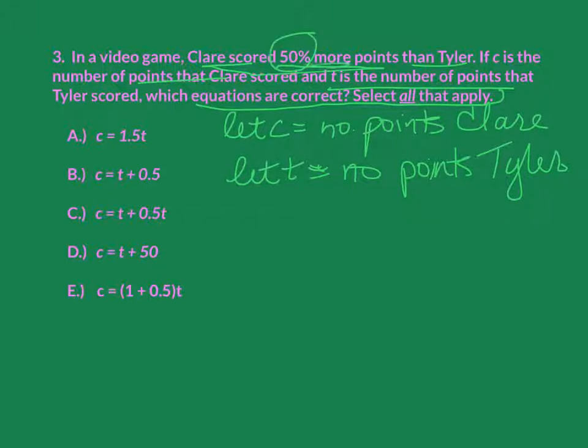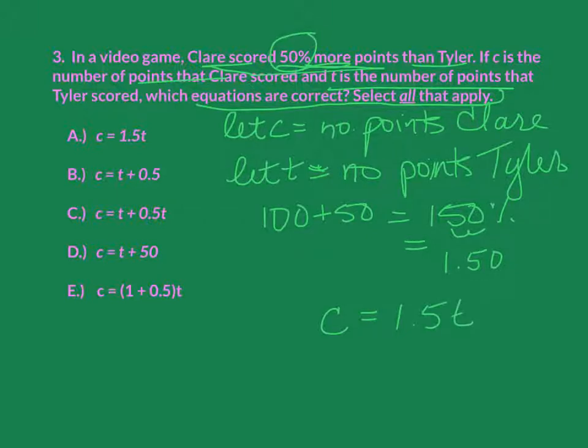So, Claire scored 50% more. So if I start with my 100 and I add 50 to it, because that's 50%, that's going to give me 150%. In decimal form, I move my decimal back two places. It's going to be 1.5 or 1.50, whichever your preference is. And I know that 150% is how much of Tyler's. So therefore, I would say that C, Claire, is going to be equal to 1.5 of Tyler's. So now if I go over here and look at what I have, my choices - oh, look at that, the first one is exactly what I wrote. So A works for sure.